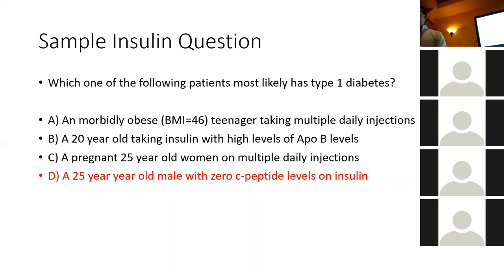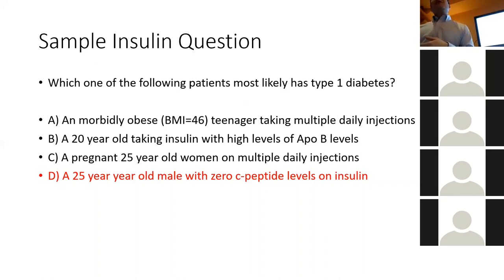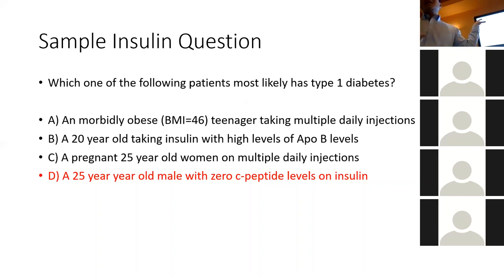Why is C wrong? Because if someone is pregnant, it's probably gestational diabetes. C-peptide is a marker of endogenous — your own — insulin production. If you have zero C-peptide, it often means you have no insulin production. That's why D is the most likely answer. Of course there are exceptions, but on the exam you have to go with what's most likely.